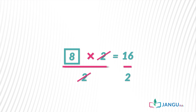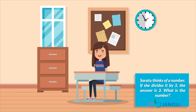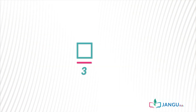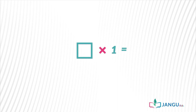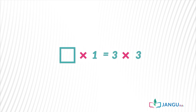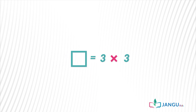One last question: Sarah thinks of a number; if she divides it by 3 the answer is 3. What is the number? Unknown ÷ 3 = 3. Remember what to do in division open sentences — that's right, cross multiply. Unknown × 1 = 3 × 3. What is 3 times 3? You are right — 9. Therefore the unknown number is 9.